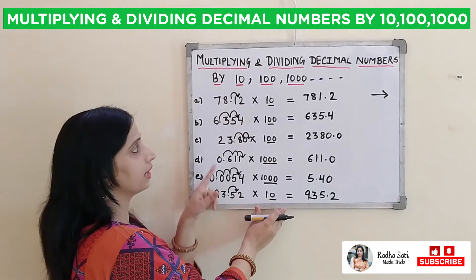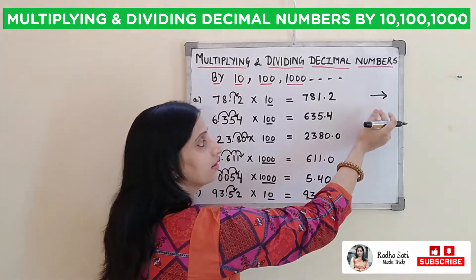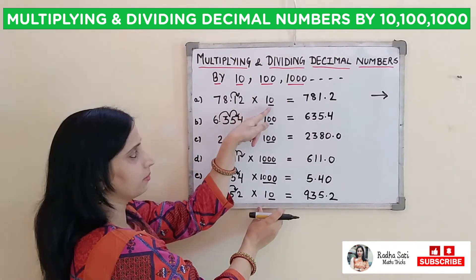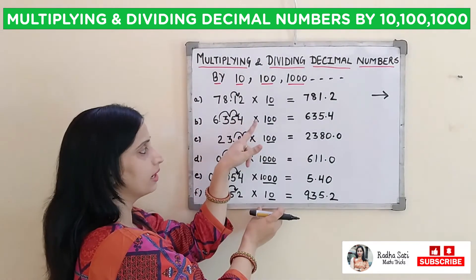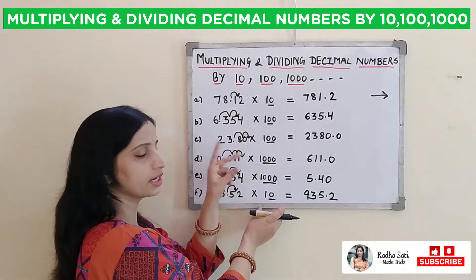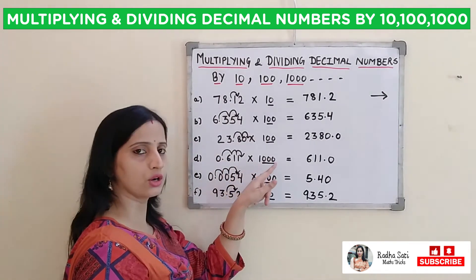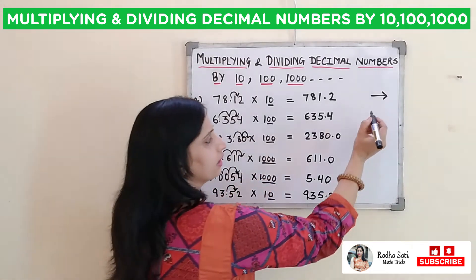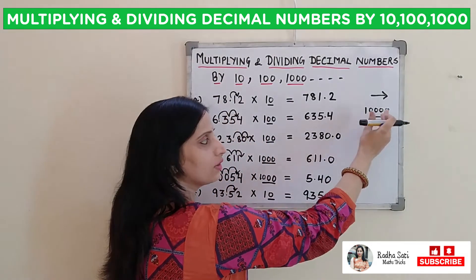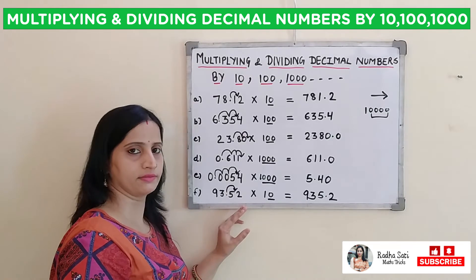While multiplying, always remember that our decimal will shift to the right hand side by the number of zeros. Like in 10 — by 1 place; when we multiply by 100 — it will shift by 2 places; in 1000 — by 3 places. And suppose there are 10,000 — in 10,000 there are 4 zeros, so the decimal will shift to the right hand side by 4 places.